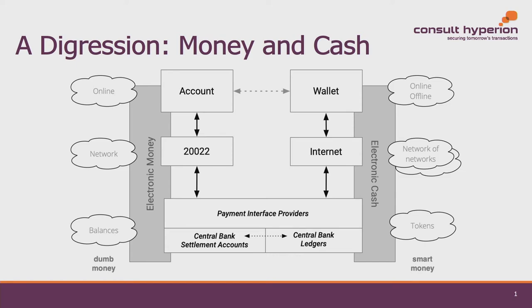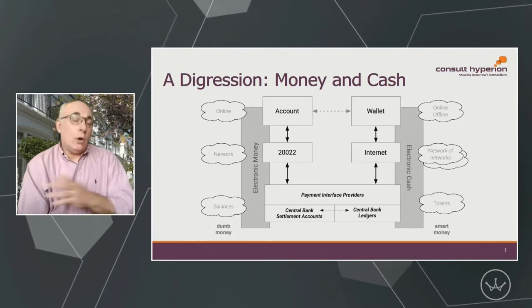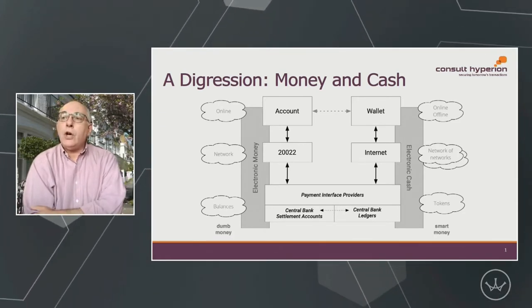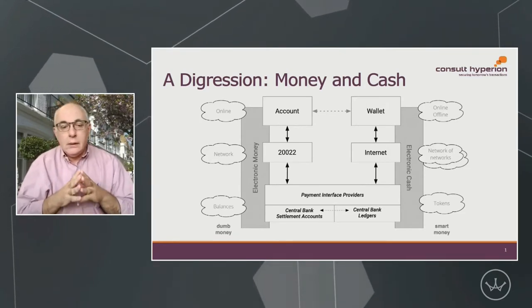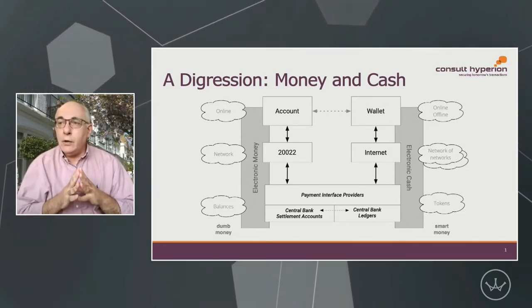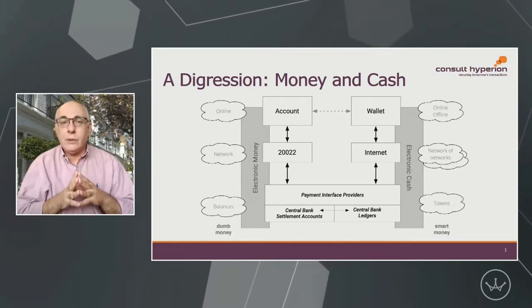Electronic money and electronic cash are both ways of implementing digital currency, but they're very different ways. Electronic money is essentially almost all of the money in circulation today — in the UK it's around 97.5 percent. Essentially all of the money in circulation is electronic money, and there's a small rump of physical cash floating about. So if we want to replace cash with something better, we have to look for electronic cash.